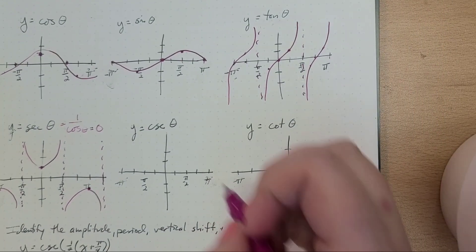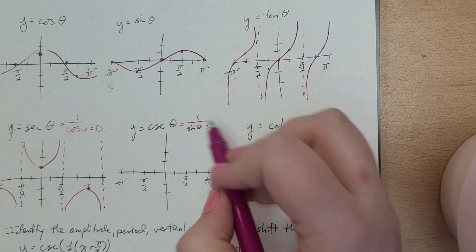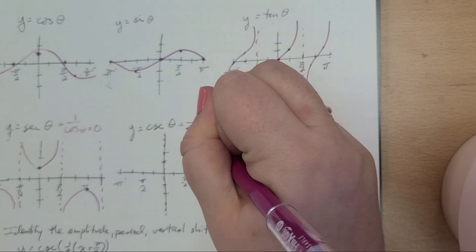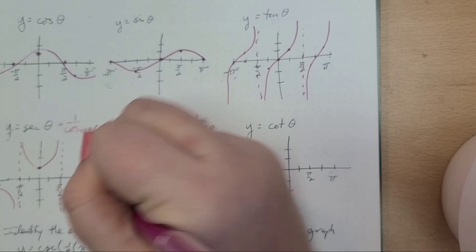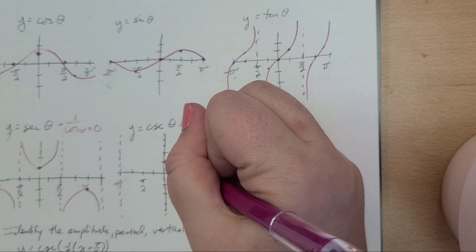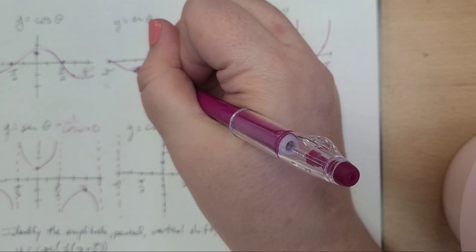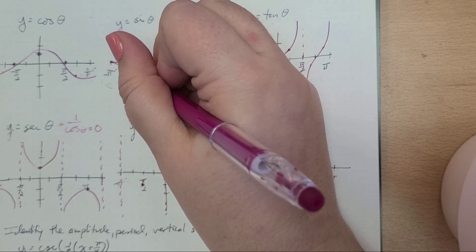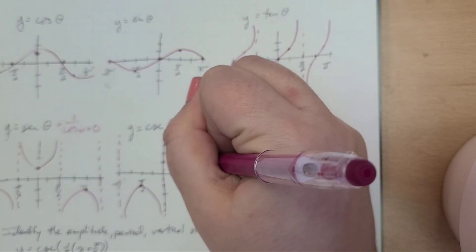Let's talk about cosecant. Cosecant is 1 over sine θ, and we want to think: when is sine of θ equal to 0? It's 0 here, it's 0 at π, it's 0 at negative π. Here we have a maximum at π/2, so at π/2 I'll put a point, and at negative π/2 I'm going to put a point. This was a minimum, now it's a maximum. This was a maximum, now it's a minimum.